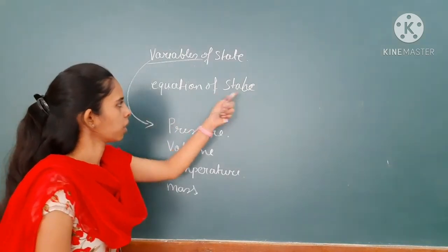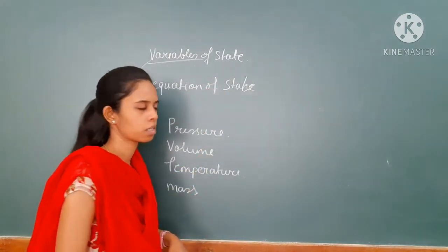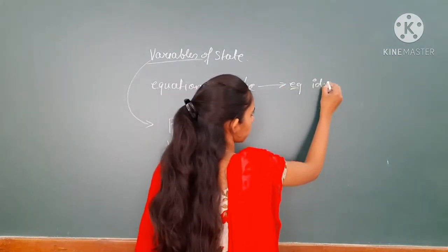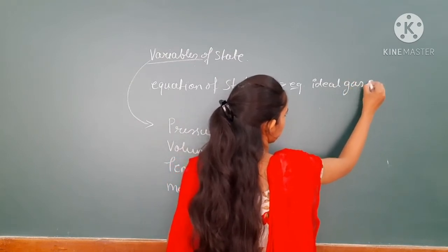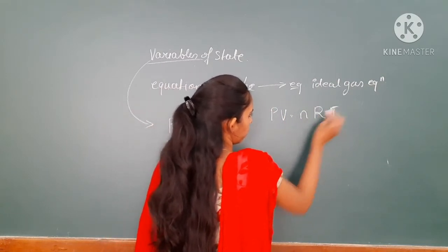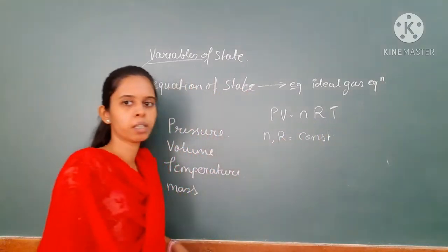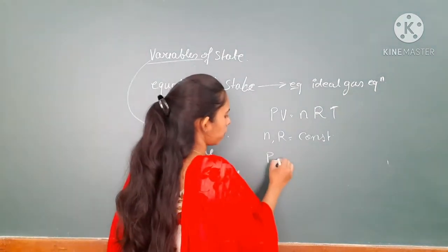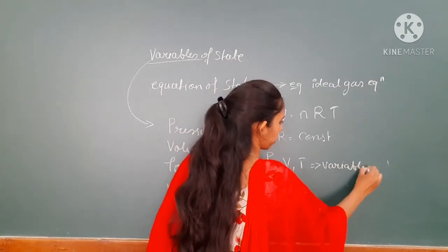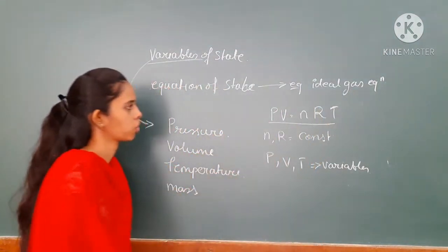Now, the equation of state means it is a mathematical representation of the system which represents the state of that system. For example, we can take the ideal gas equation: PV equals NRT. Here N and R are constants; the other terms P, V, and T vary. So P, V, and T are the variables which represent the state of the system. This is the equation of state.